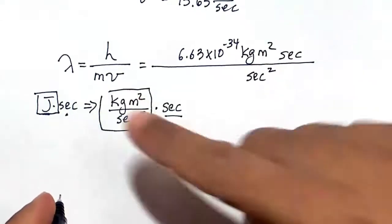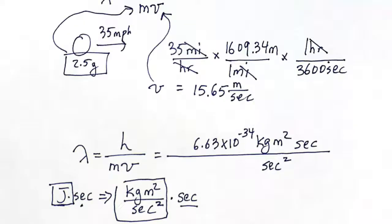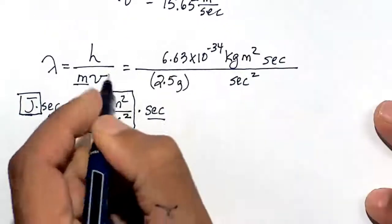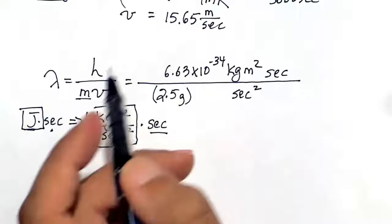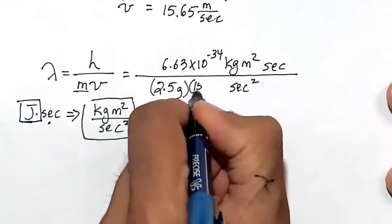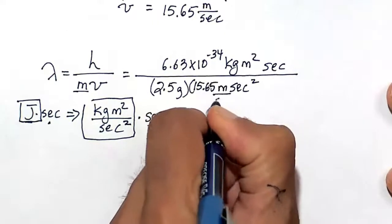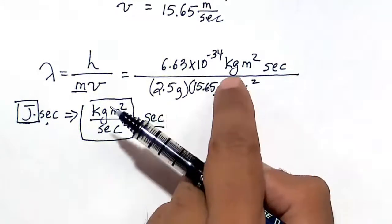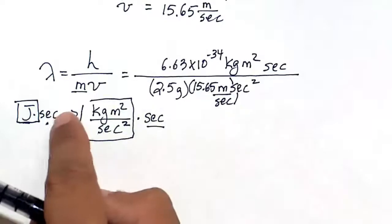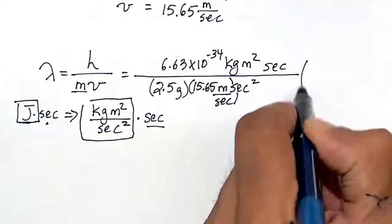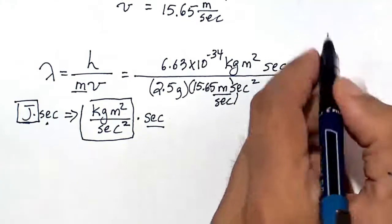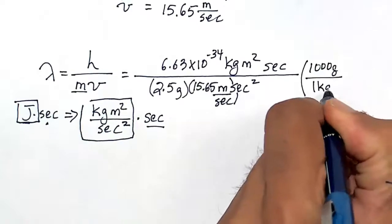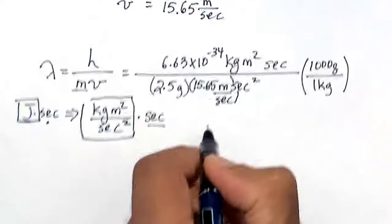The mass is 2.5 grams, given to us in this problem. And we already calculated the velocity in meters per second: 15.65 meters per second. The ping-pong ball is in grams. The units of Planck's constant in joules times second—the joule has a kilogram. So I'm going to get rid of that kilogram by realizing that 1,000 grams is 1 kilogram.